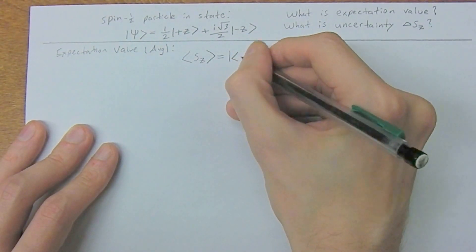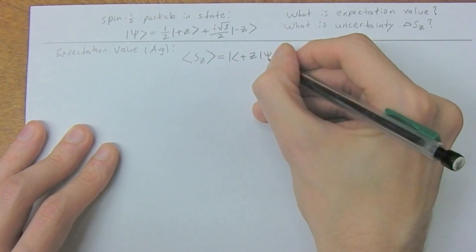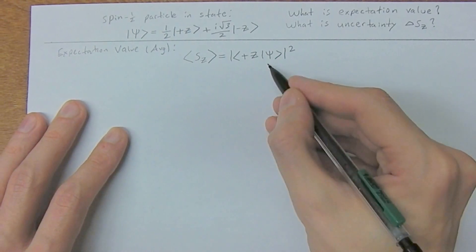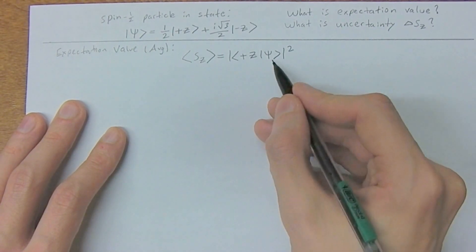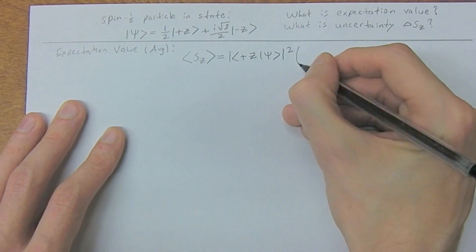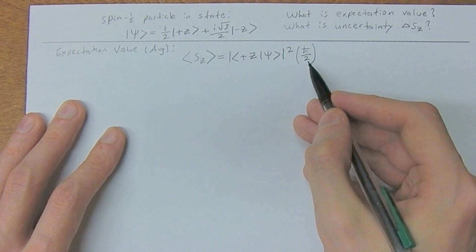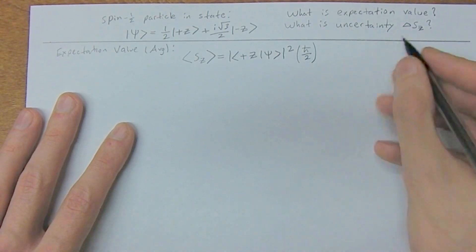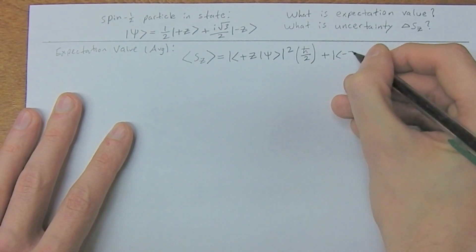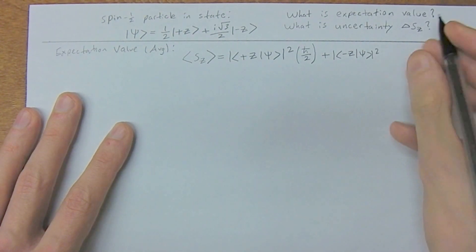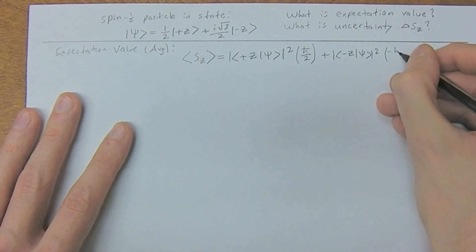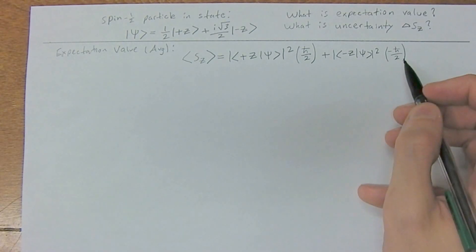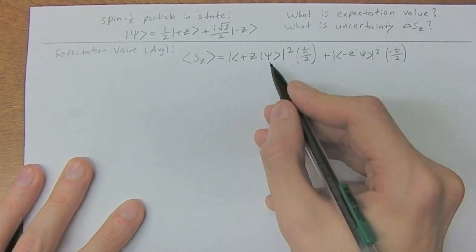This is equal to — just like when we were finding the probability earlier — we're going to square our probability amplitude. So we multiply the complex conjugate times the non-complex conjugate, and we tag on what we're actually expecting to find as the result of our experiment, which is h-bar over two (positive) for plus-z. Then we do the same for our other case and multiply by the result if we found it in the negative-z state, which is negative h-bar over two.